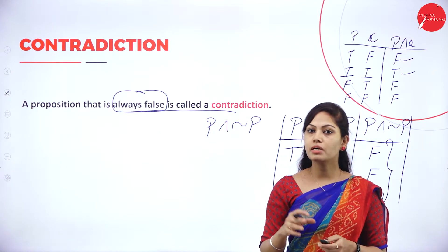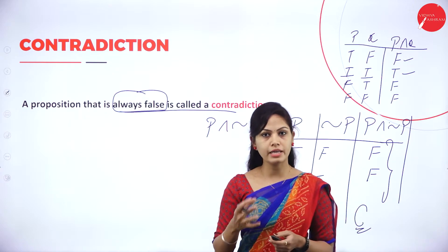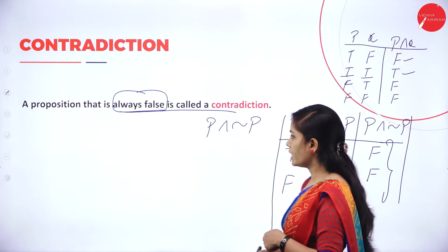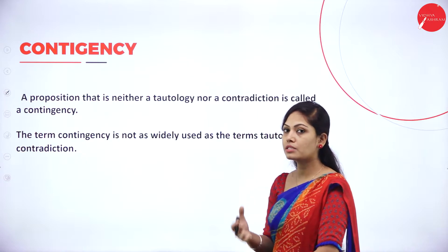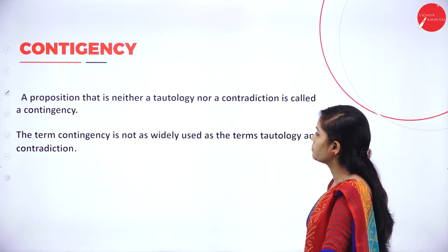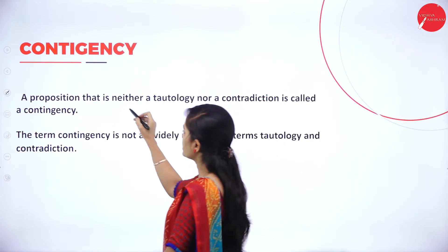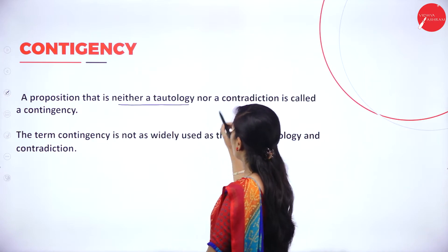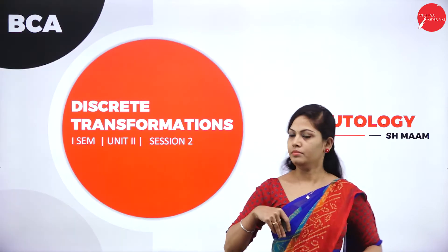These are the differences between tautology and contradiction. The next important concept is contingency — a proposition that is neither a tautology nor a contradiction.